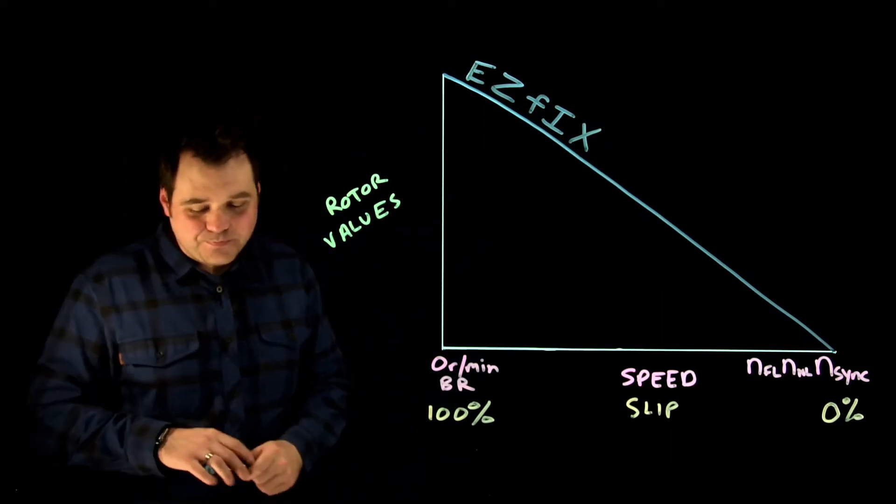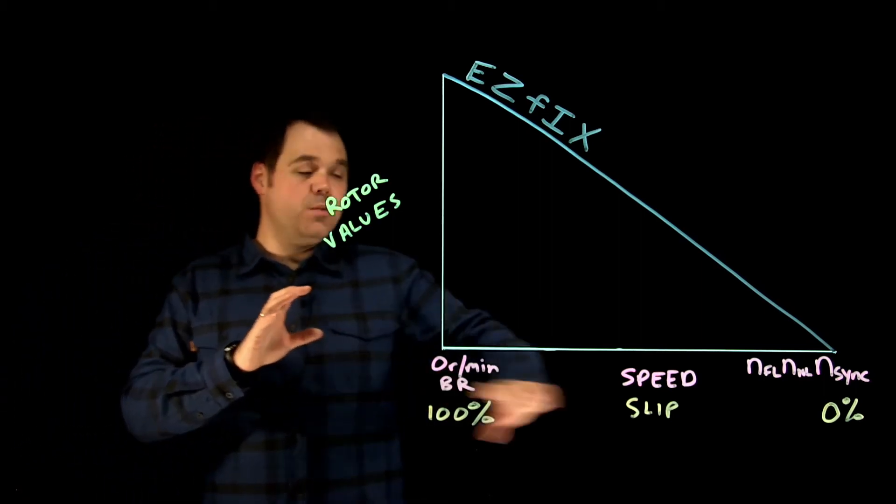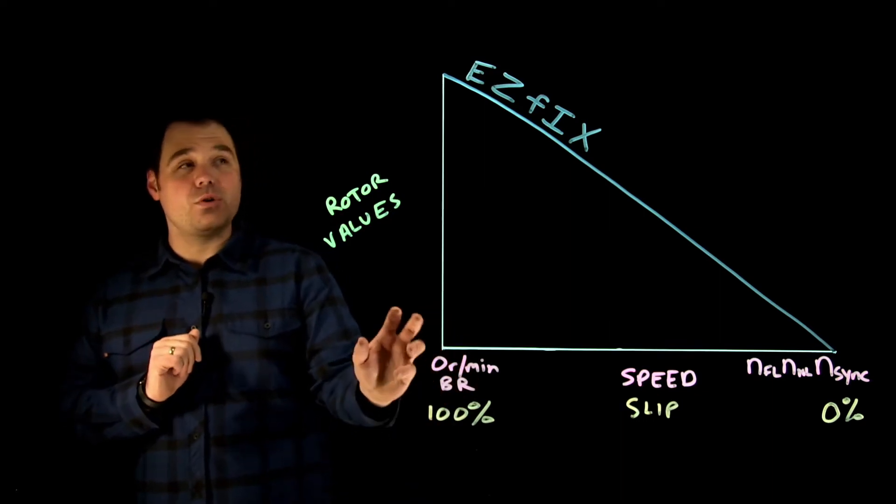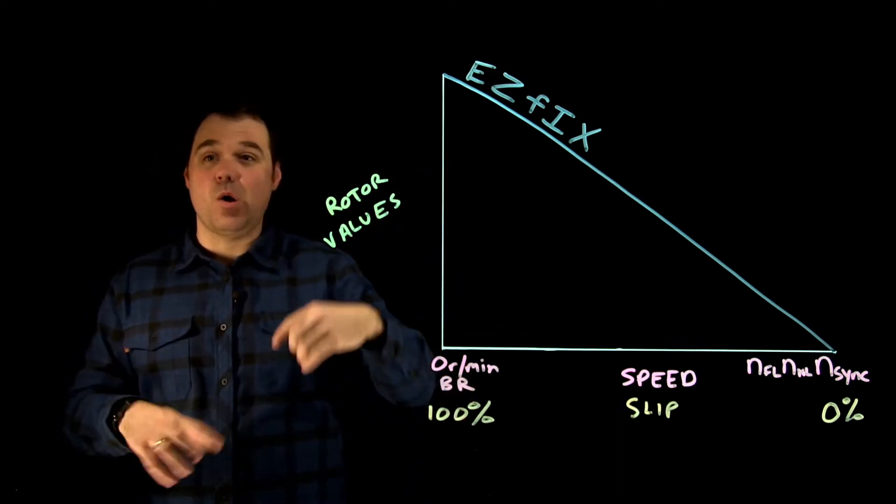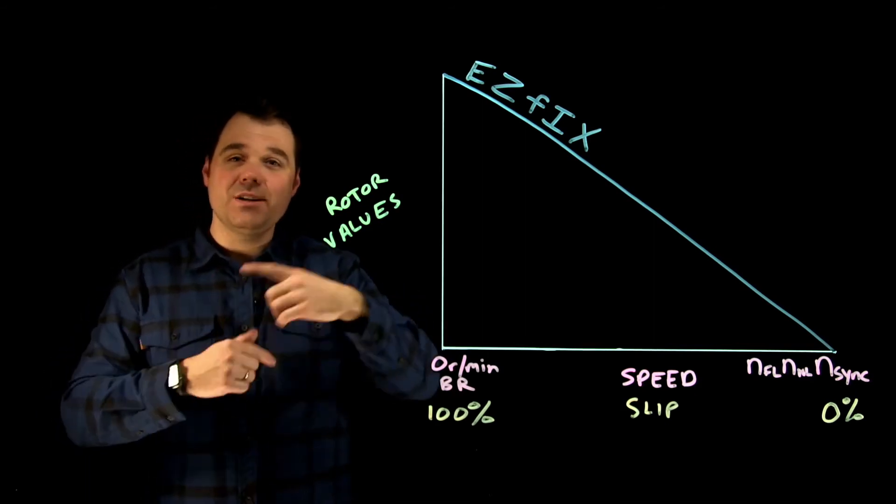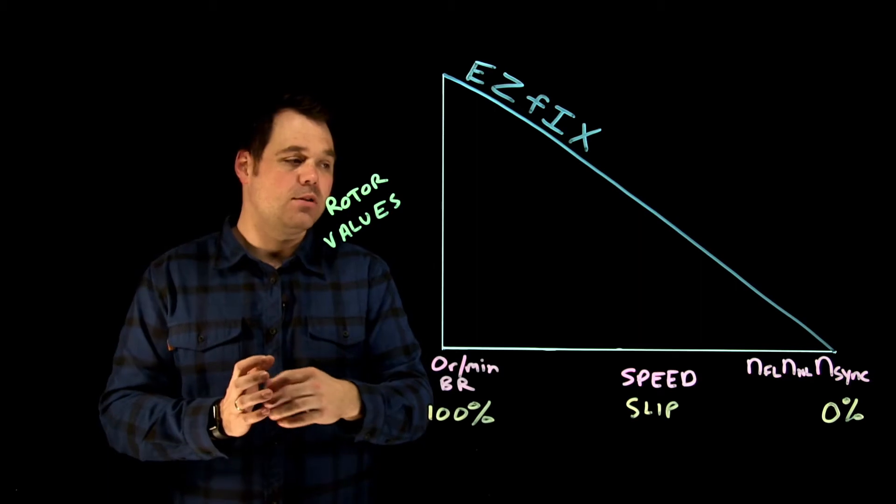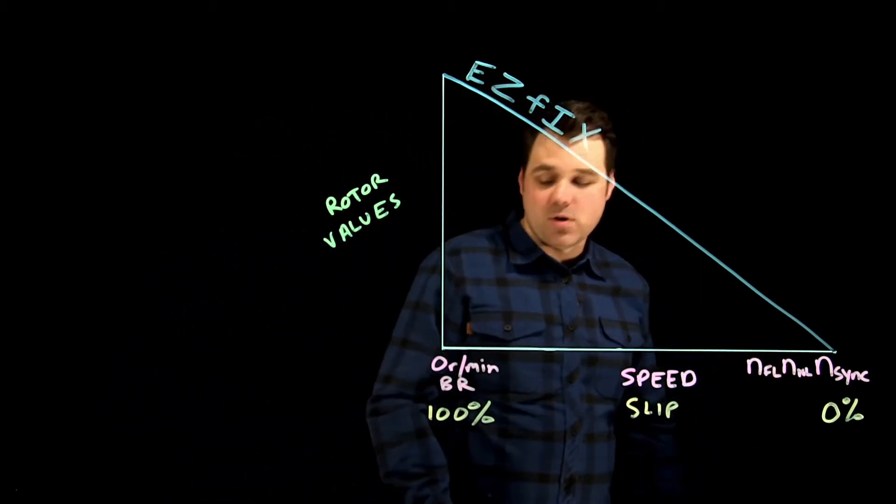Easy FIX. So all of those things are going down proportionally with slip. As slip goes down, those go down. When I have a blocked rotor condition, all of those are at a maximum because of how much relative motion there is between the magnetic field of the stator and the stationary rotor. As I get faster, there's less relative motion. So I get less induction of all those things.